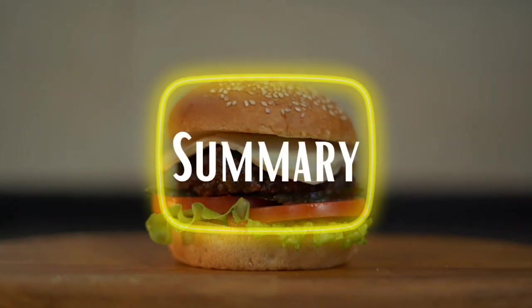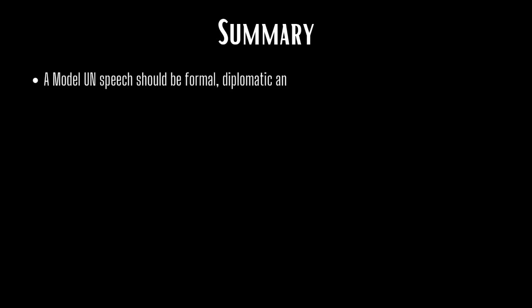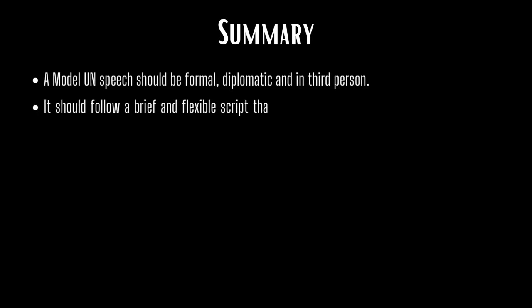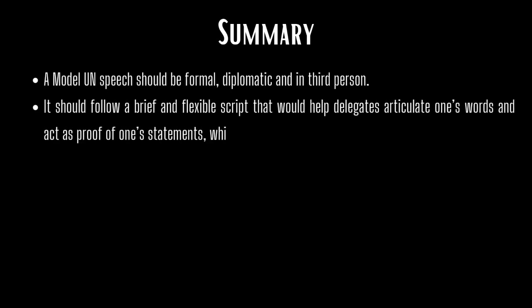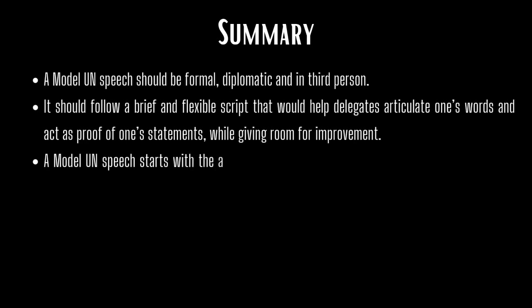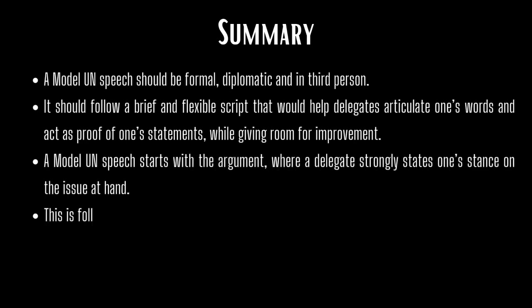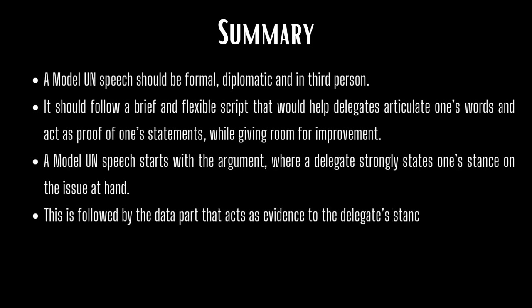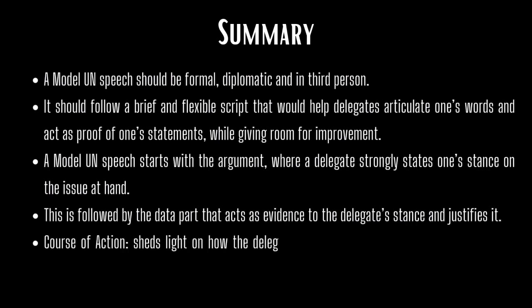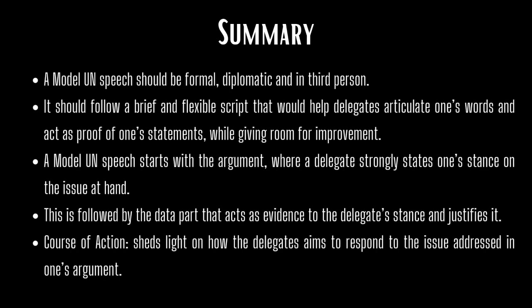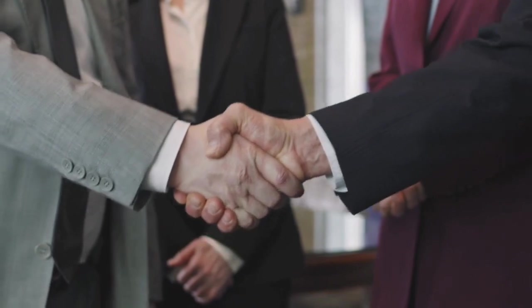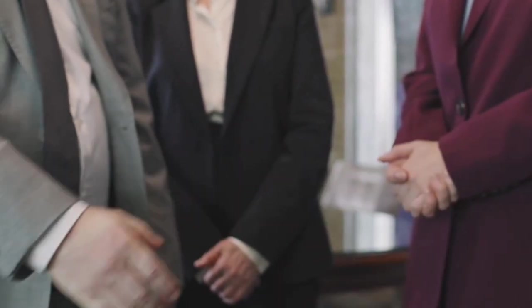Let us summarize your learning in this video. A Model UN speech should be formal, diplomatic, and in third person. It should follow a brief and flexible script that helps delegates articulate their words and acts as proof of one's statements, while giving room for improvement. A speech starts with an argument where a delegate states their stance, followed by data acting as evidence to justify it, and ends with a course of action. In our next segment, we will explore the grayscale of negotiation and diplomacy and understand its importance in a Model UN setting. Thank you.